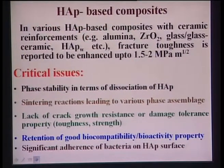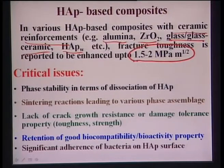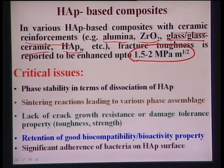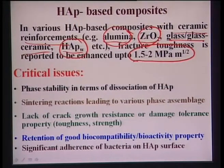In various hydroxyapatite composites with ceramic reinforcements like alumina, zirconia, glass, glass ceramics, or hydroxyapatite whiskers, fracture toughness is reported to be enhanced up to 1.5–2 MPa√m. Critical issues in HA composite development include: first, phase stability in terms of dissociation of hydroxyapatite — Ca10(PO4)6(OH)2 can transform to Ca3(PO4)2, known as tricalcium phosphate (TCP), which has two polymorphs: alpha-TCP and beta-TCP.